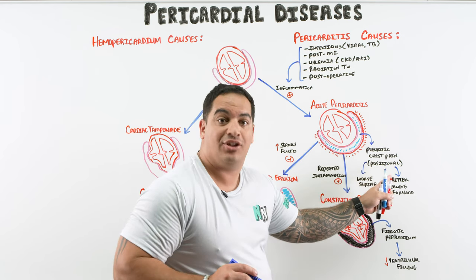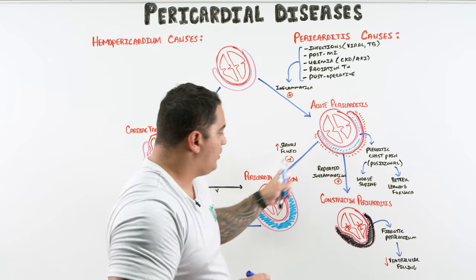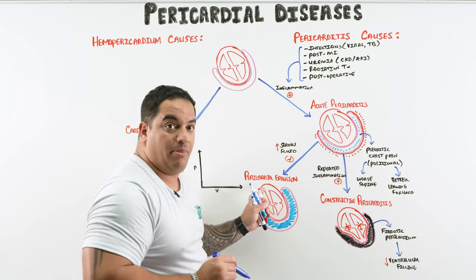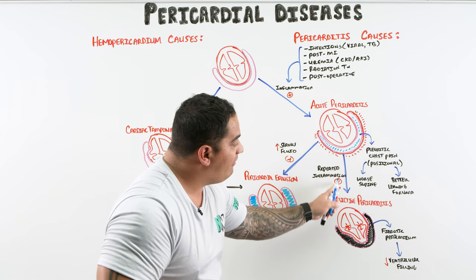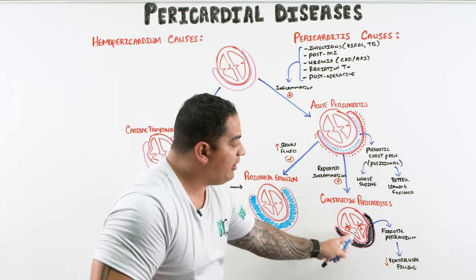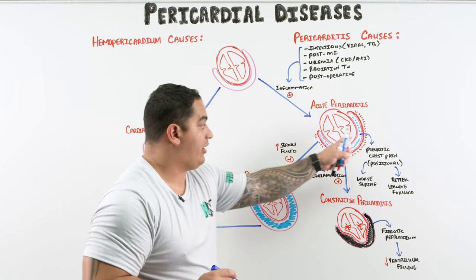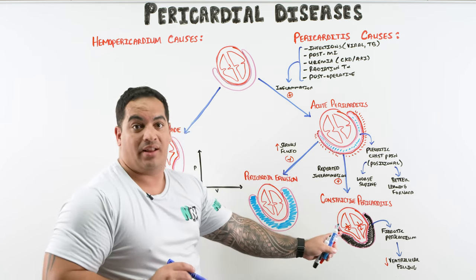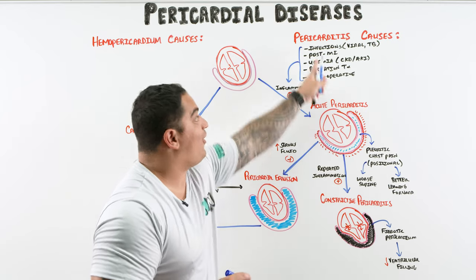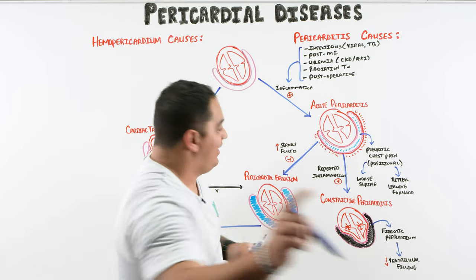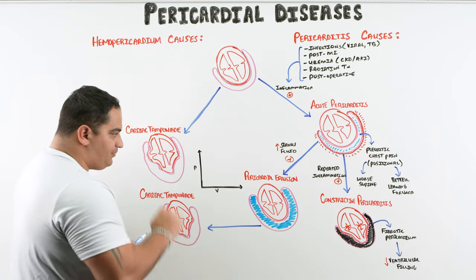So far: an inflamed pericardium causes classic chest pain; it can cause serous fluid to accumulate into a pericardial effusion; and if repeatedly inflamed, the pericardium becomes fibrotic and reduces ventricular filling — that's constrictive pericarditis. Now let's say a patient has pericarditis and develops a pericardial effusion that continues to grow.